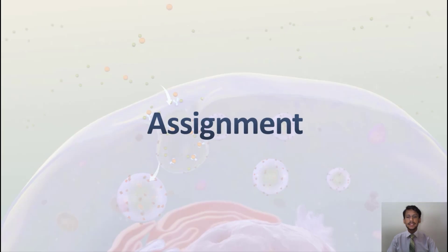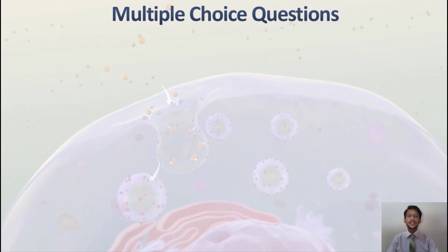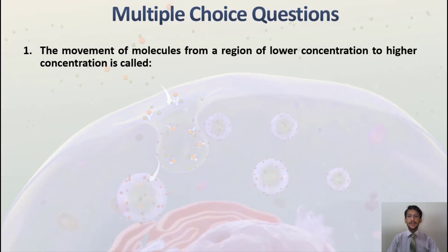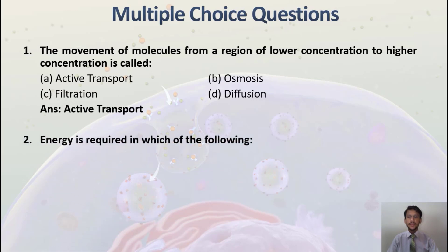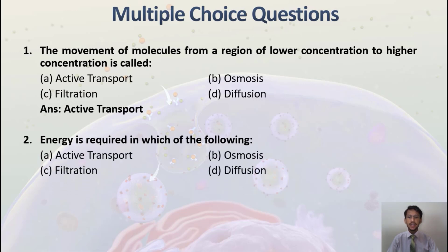Let's look at the assignment that will be your homework. Multiple choice questions: The movement of molecules from a region of lower concentration to higher concentration is called — Active Transport, Osmosis, Filtration, or Diffusion? The correct answer is Active Transport. Energy is required in which of the following processes — Active Transport, Osmosis, Filtration, or Diffusion? The correct answer is Active Transport.